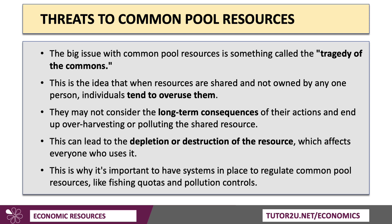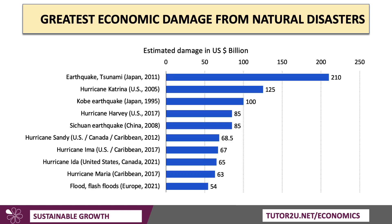The collapse of fish stocks in a particular area is one such example. That's why it's important to have systems or policies in place to regulate common pool resources — things like tradable fishing quotas and enforceable pollution controls. When we think about the environment, one obviously thinks about the growing threats from climate change and the increasing economic as well as human cost of natural disasters.